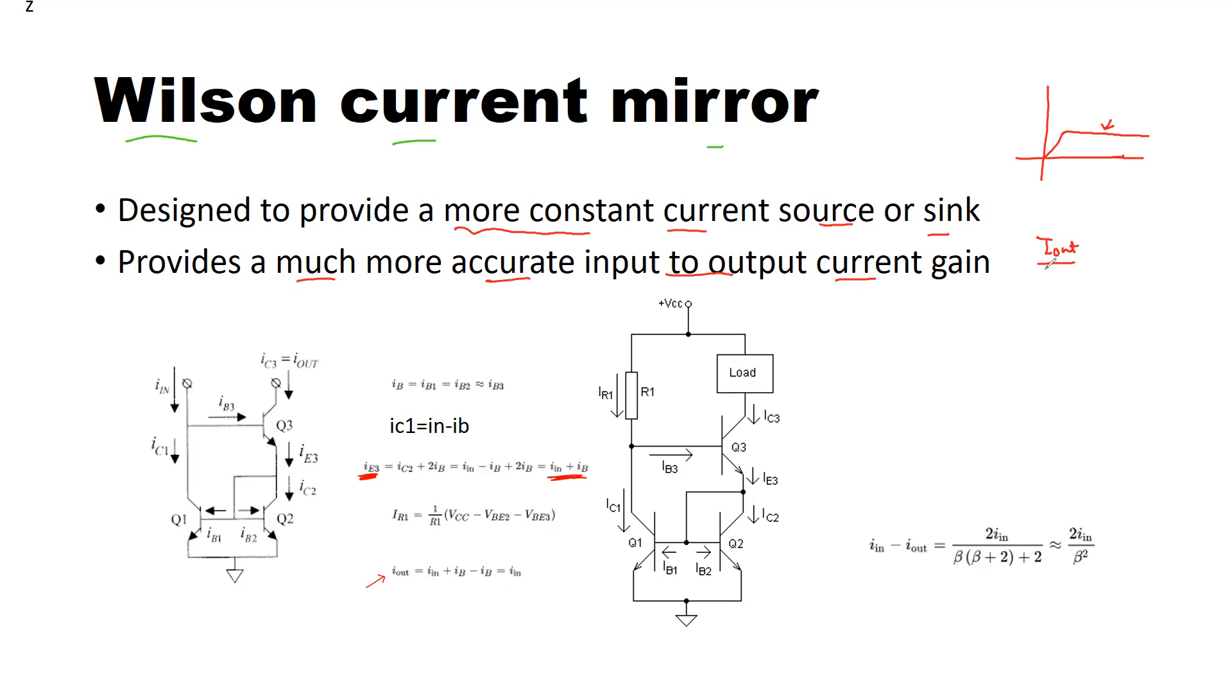divided by I_reference or I_in is approximately equal to one, most closely equal to one, unlike a simple two-transistor BJT-based current mirror where the output current was equal to input current, that is I_reference minus two times I_b.